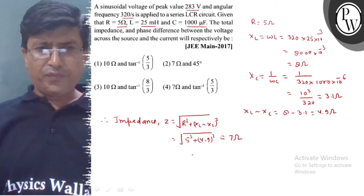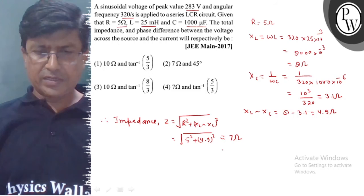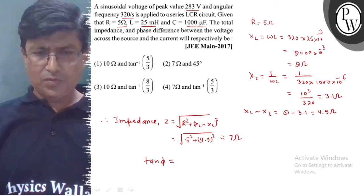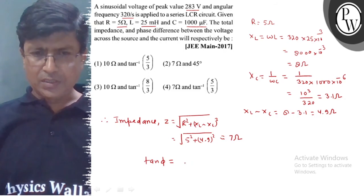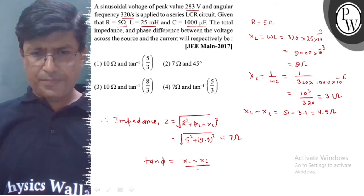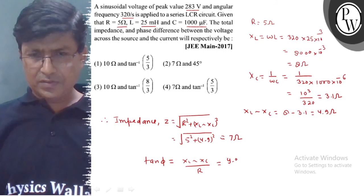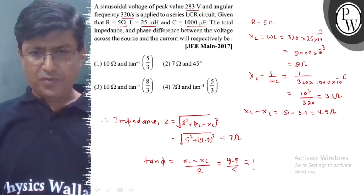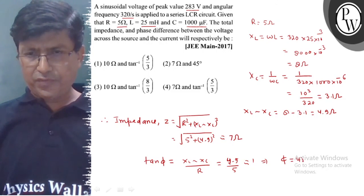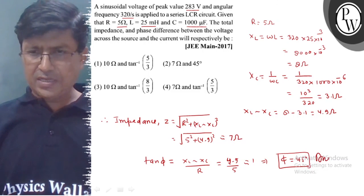Now we need to find the phase difference between voltage and current. Tan theta equals XL difference XC upon R, which is 4.9 upon 5, approximately equal to 1. So theta equals 45 degrees.